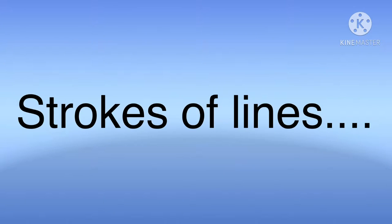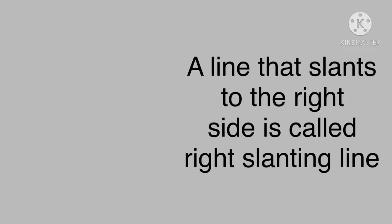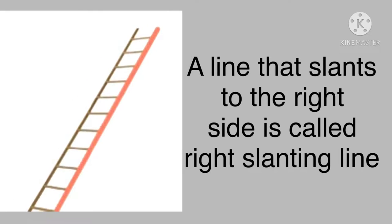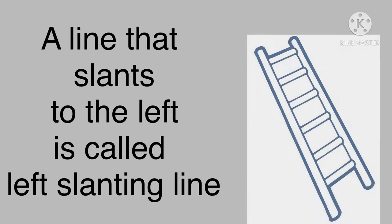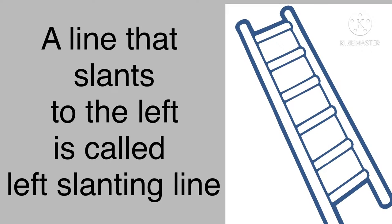Hi kids, in this video we are going to see the strokes of lines — that is right slanting line and left slanting line. A line that slants to the right side is called right slanting line, and a line that slants to the left side is called the left slanting line.